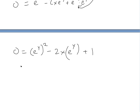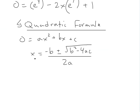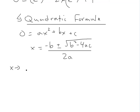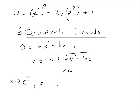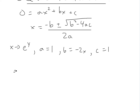The quadratic formula states: if 0 equals a·x² plus b·x plus c, then x equals negative b plus or minus square root of (b² minus 4ac), all divided by 2a. You can see the proof in the video links below. In our equation, a equals 1, b equals negative 2x, and c equals 1.